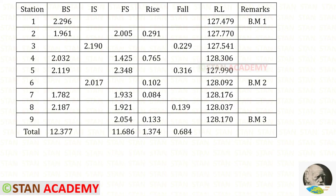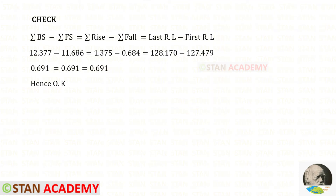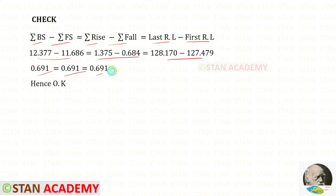Now we need to find the summation. When we add all of the back sights, we will get this. When we add all of the fore sights, we will get this. When we add all of the rises, we will get this. And when we add all of the falls, we will get this. Now we apply the check: summation of back sight minus summation of fore sight equals summation of rise minus summation of fall, and that equals the difference between the last reduced level and the first reduced level. For all of them, we will get the same value. Hence, okay.